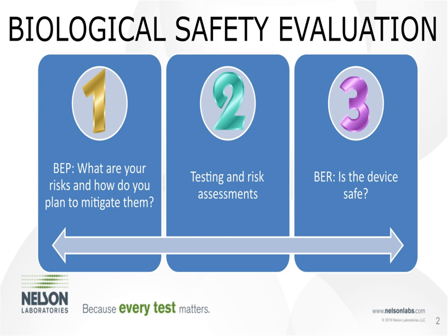We start with a biological evaluation plan, or BEP — this is where you identify your risks and lay out a plan to mitigate them. The second part is testing and risk assessments, which was covered by Dr. Campbell yesterday, focusing on extractable and leachable testing used to justify out of testing or address issues. This area also includes in vitro or in vivo animal testing.